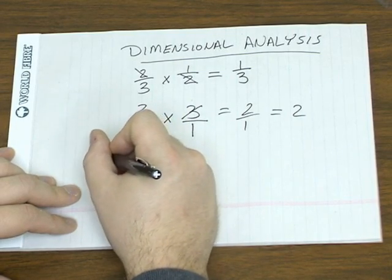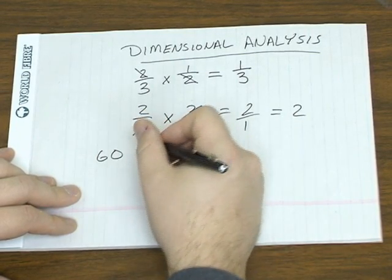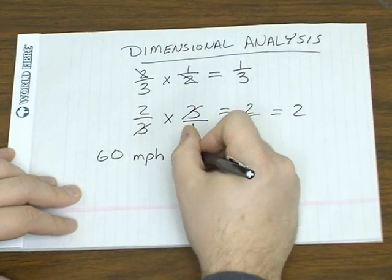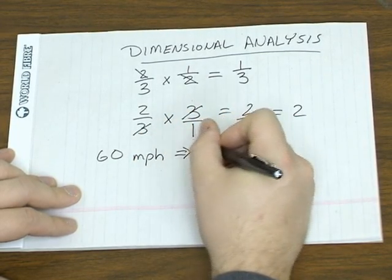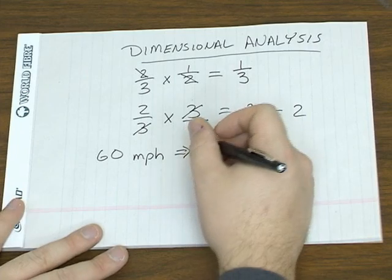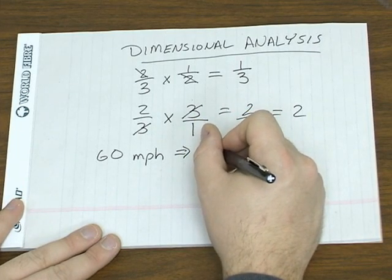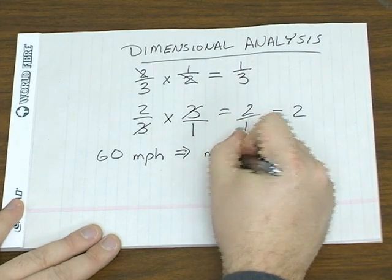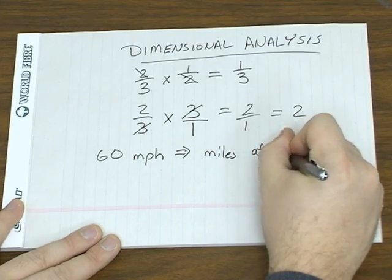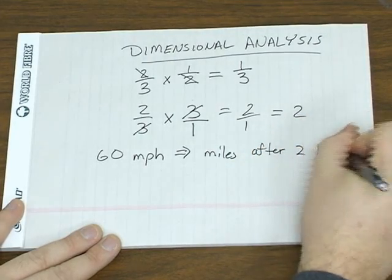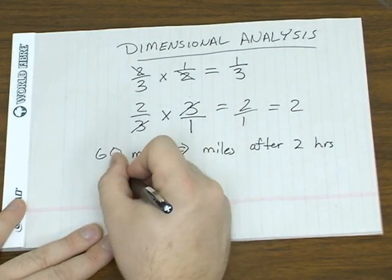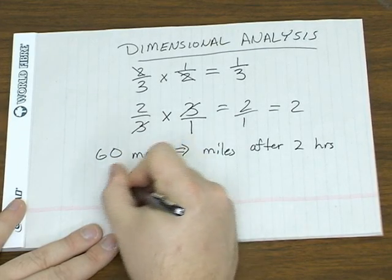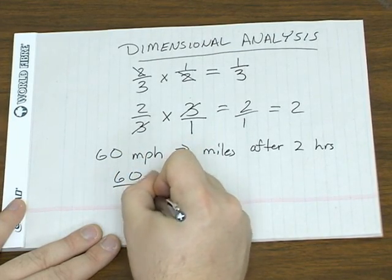For example, let's say you got a car going 60 miles per hour. And you want to know how many miles it's traveled after two hours. So you write that as a fraction, you get 60 miles per hour, per one hour.